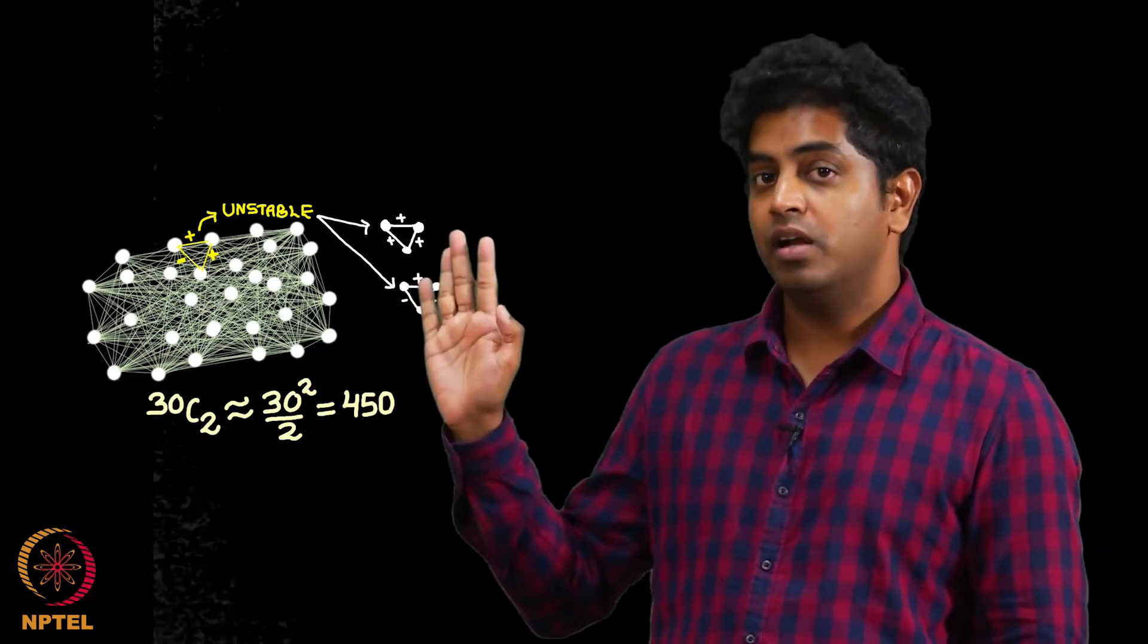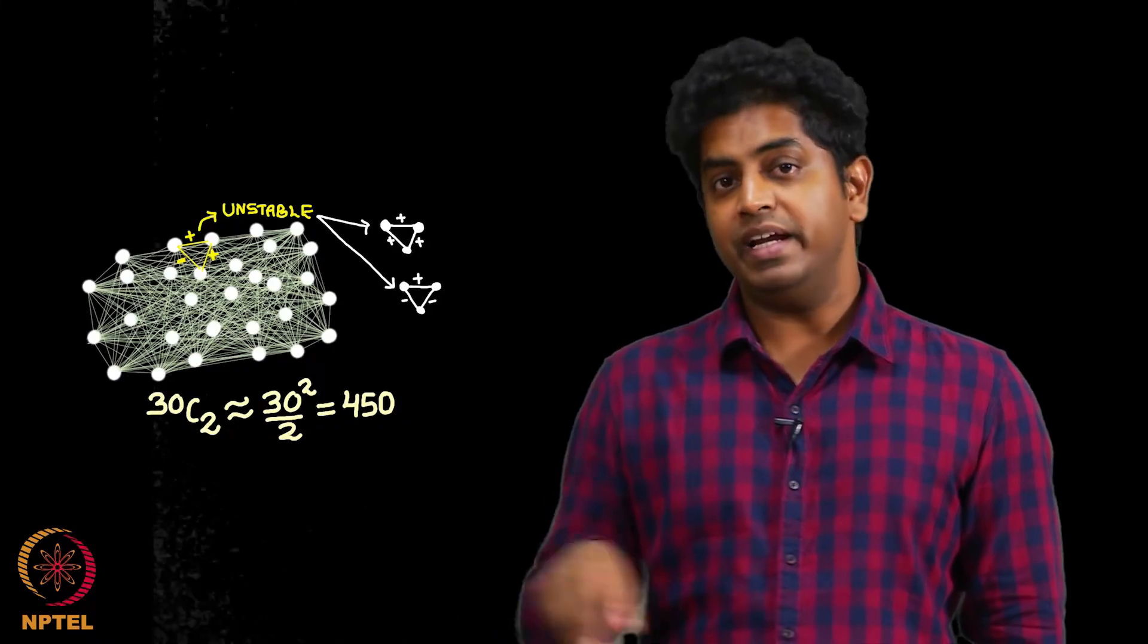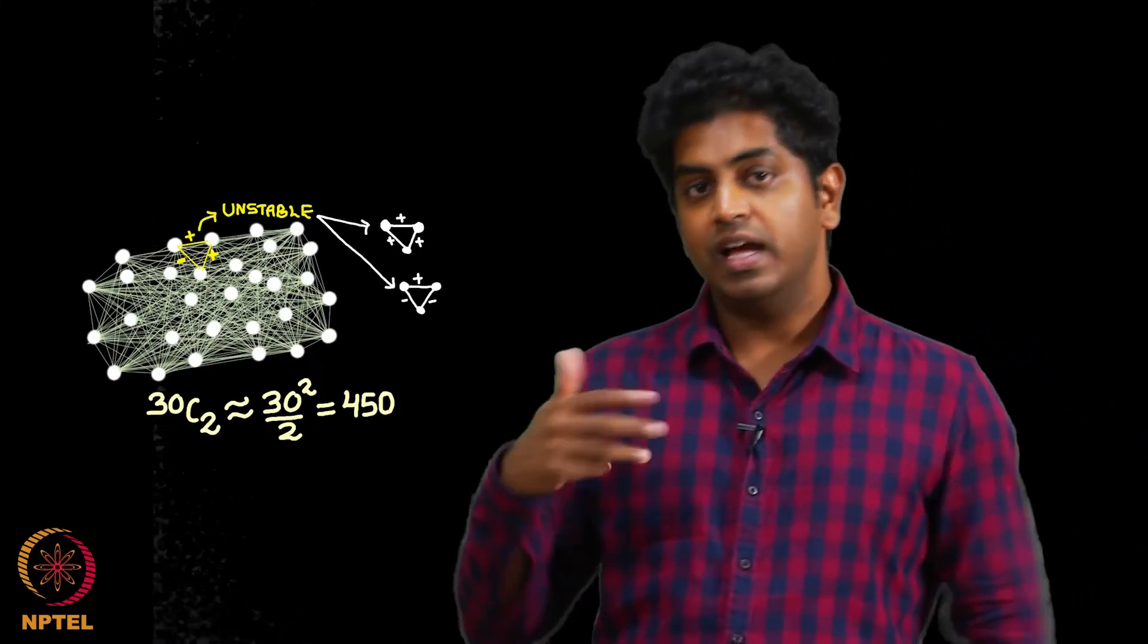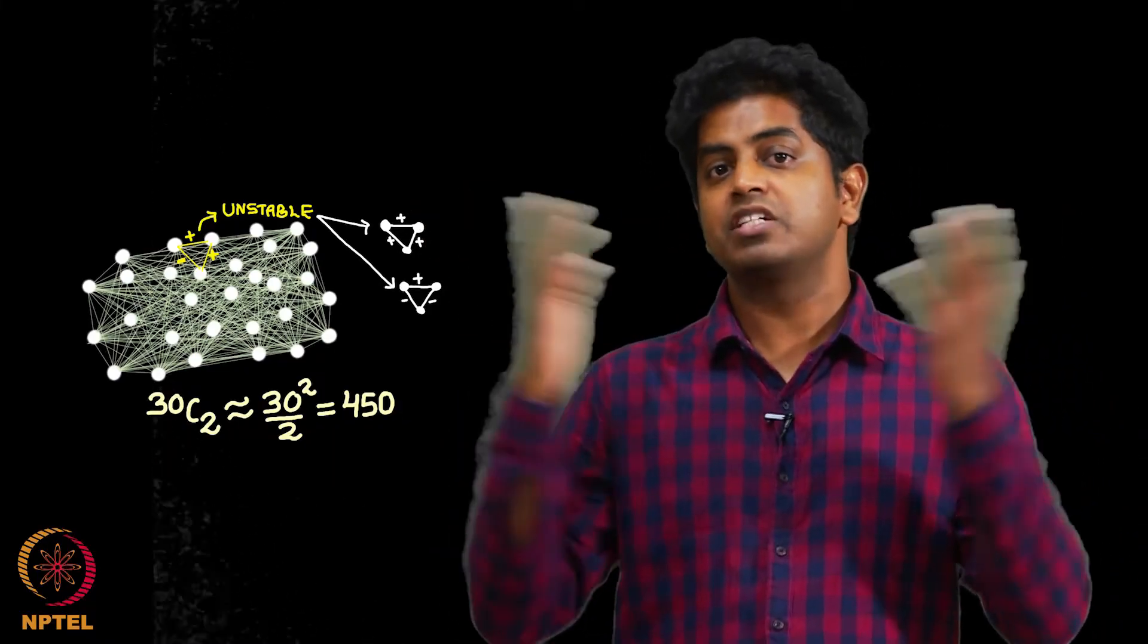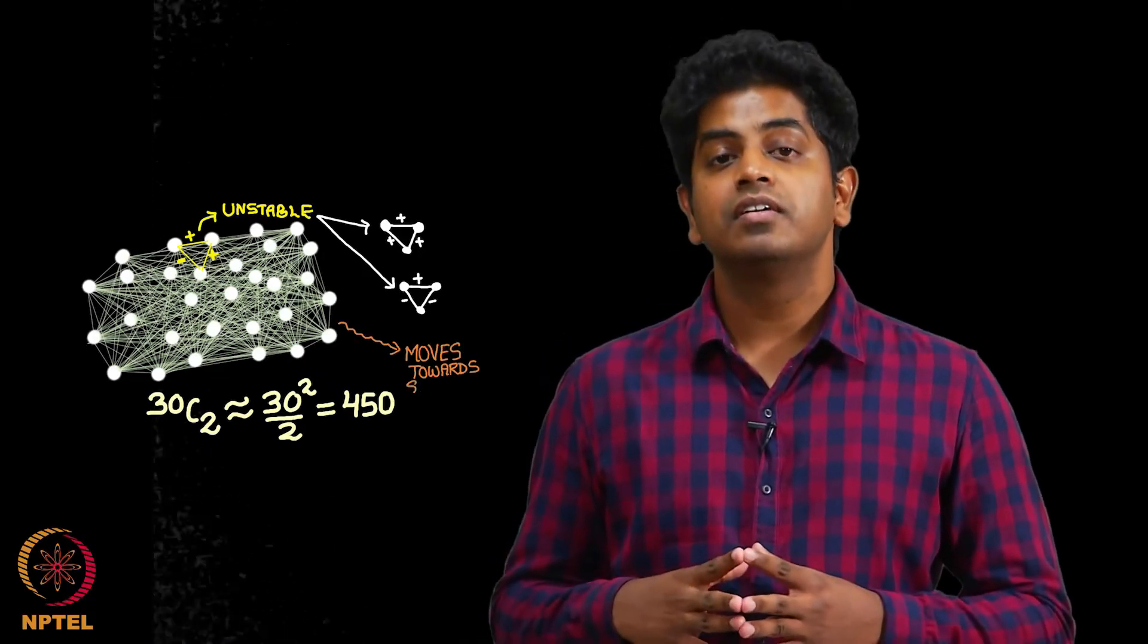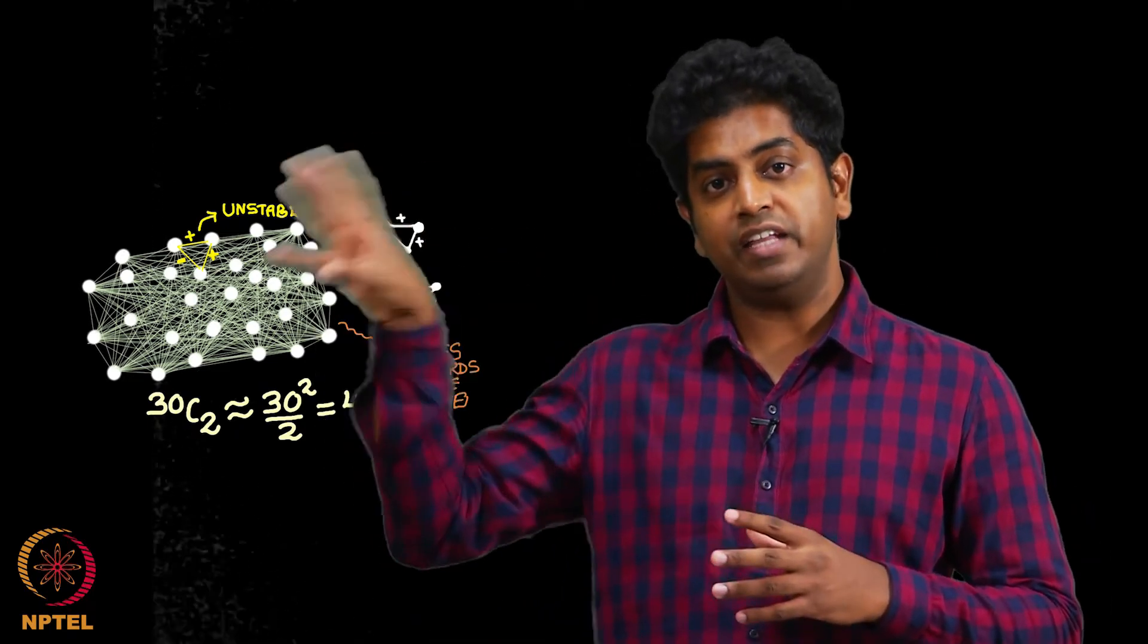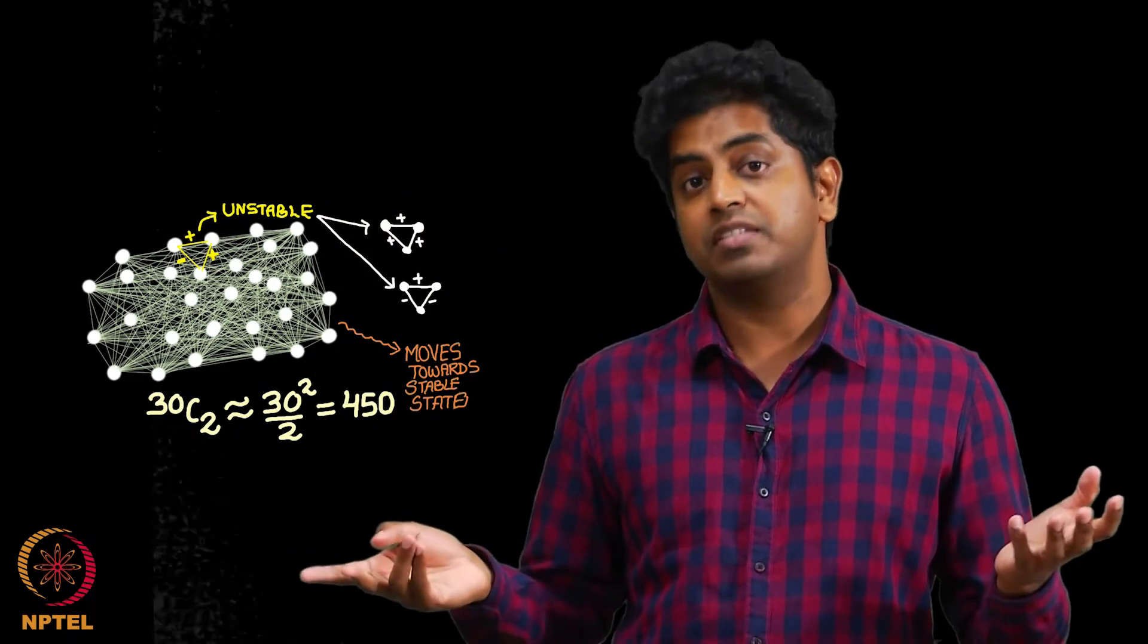All you should remember by looking at this figure is that given a complete graph with 30 nodes and some random plus minus symbols on these edges in an organization, it moves towards stable state because every triangle here may not always be stable.